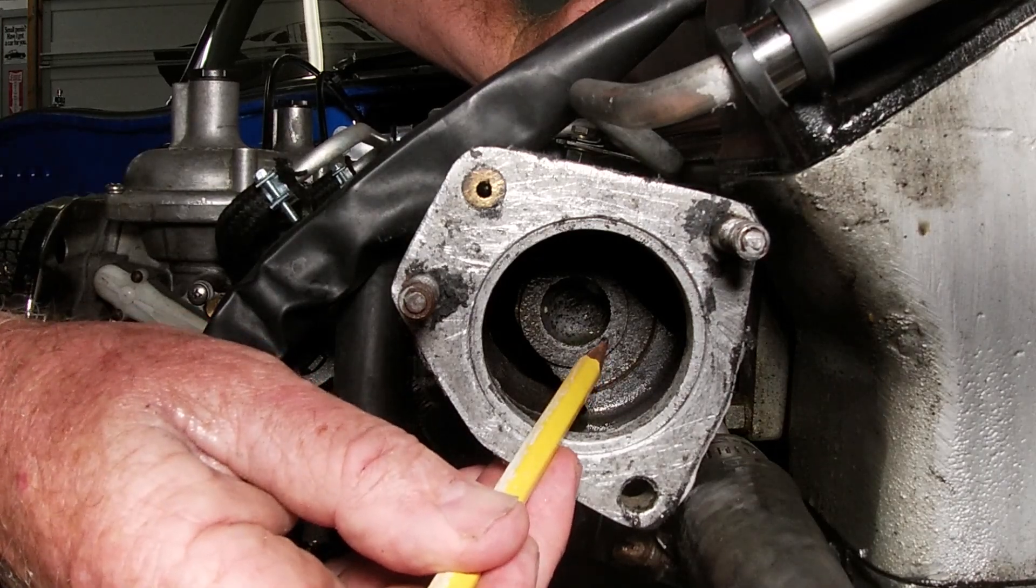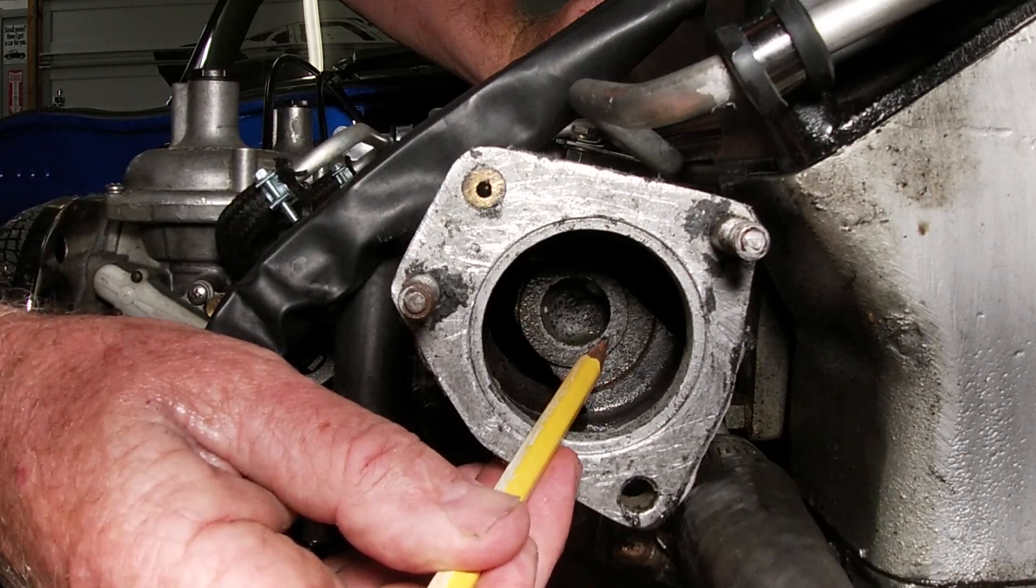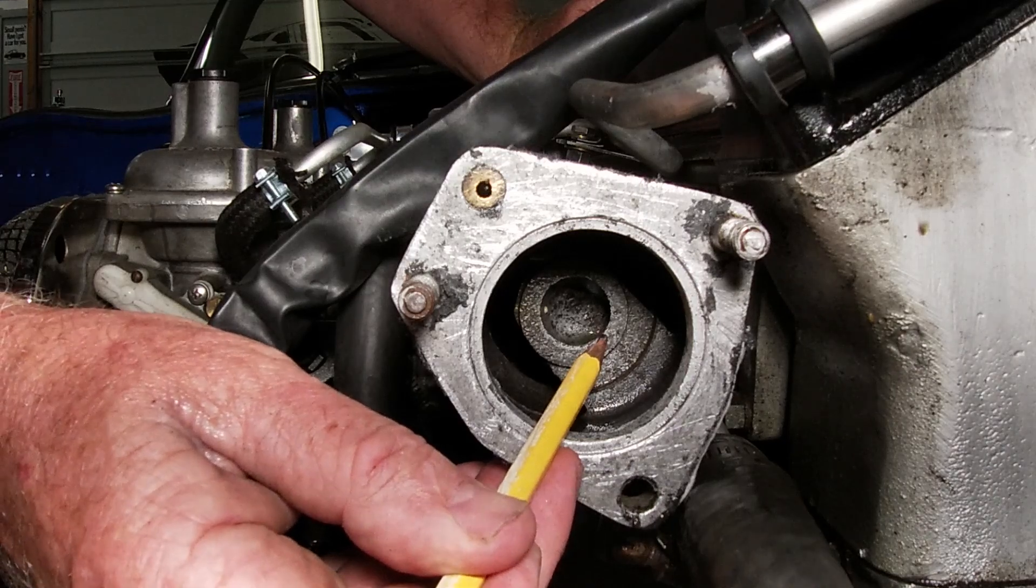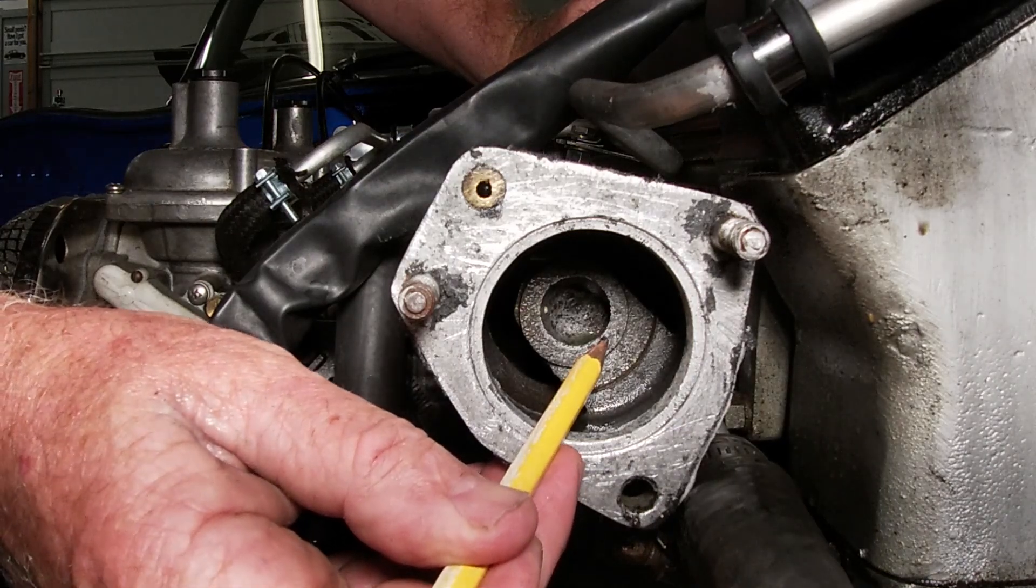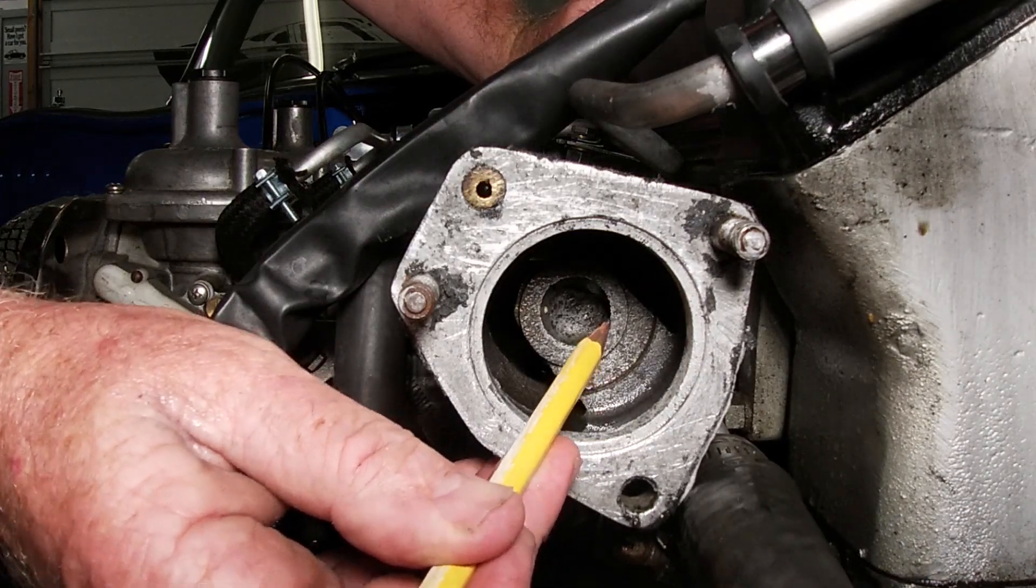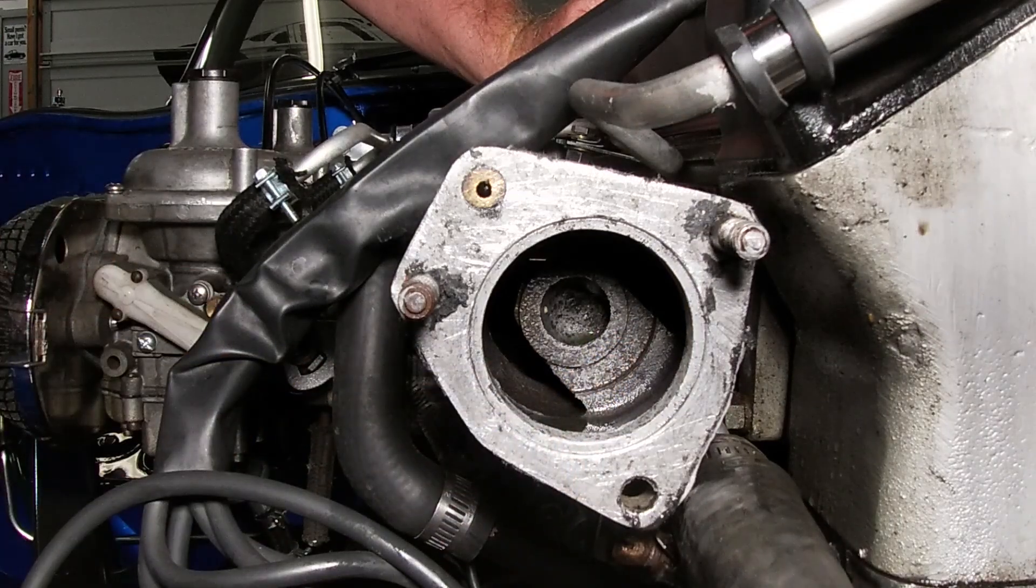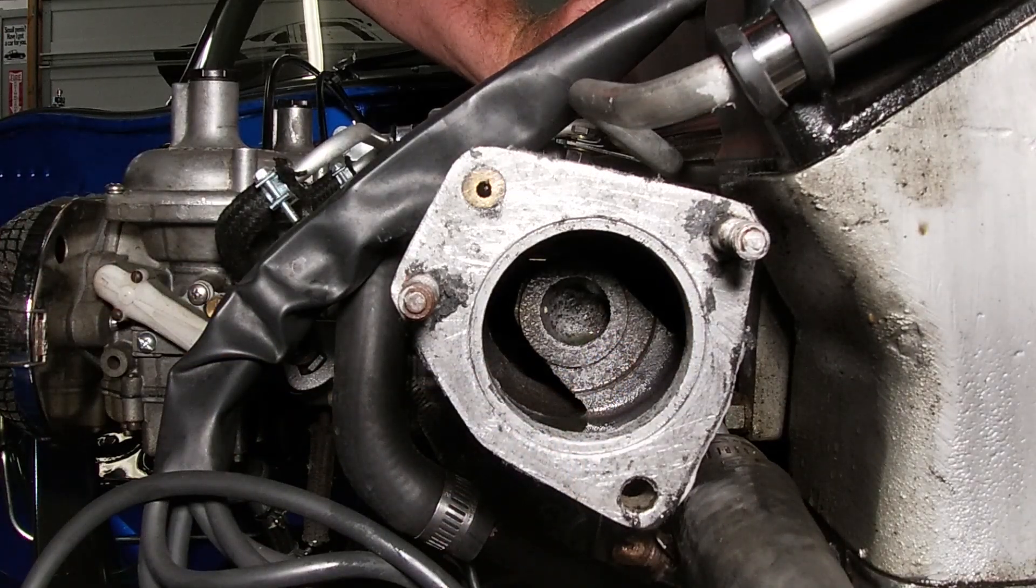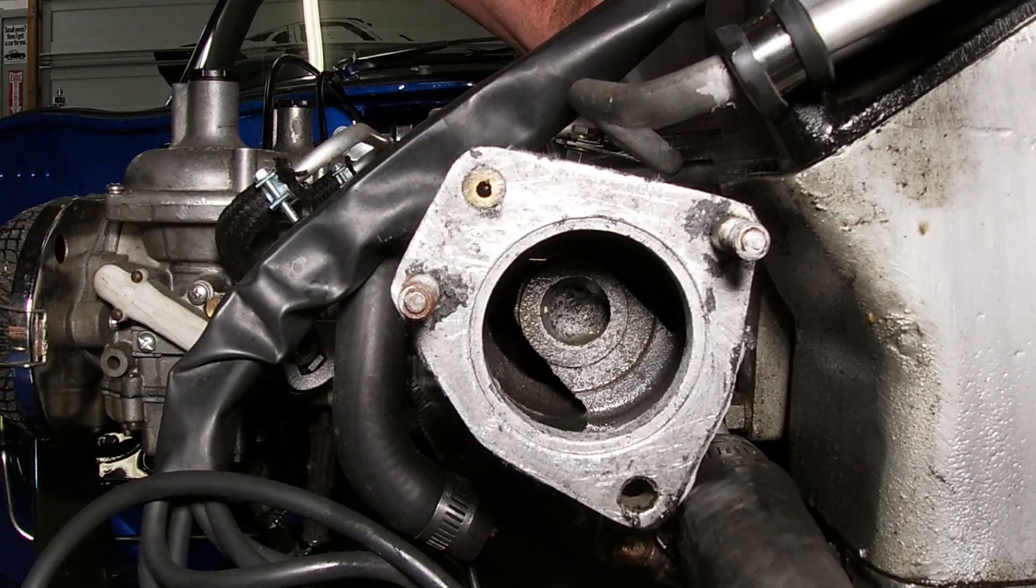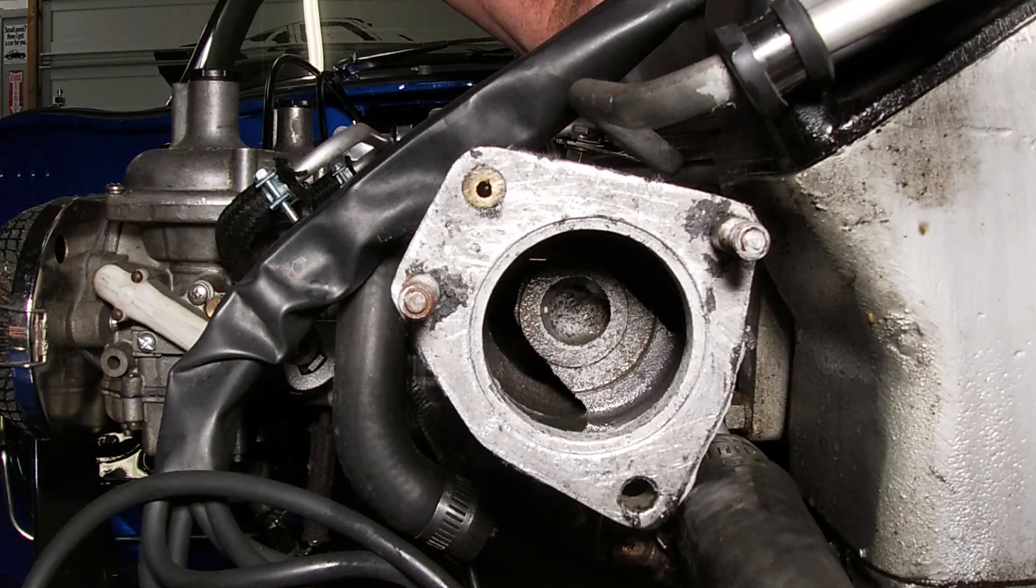So when the thermostat housing, when the thermostat valve is open, that extended annulus plate seals up against that and blocks the flow through that port. And that forces the water to flow through the top hose of the radiator and obviously into the radiator.